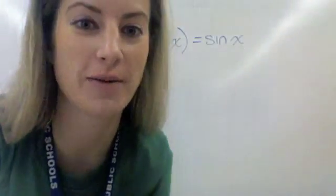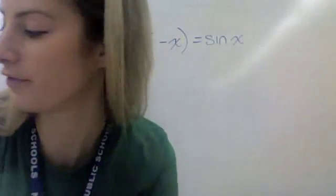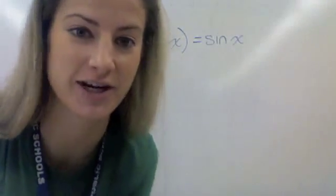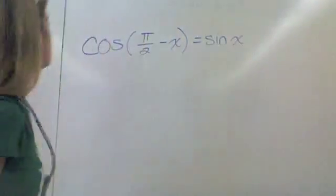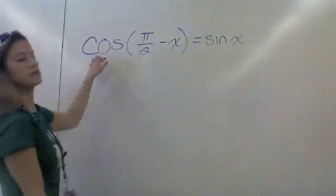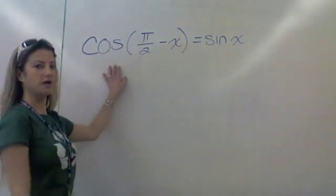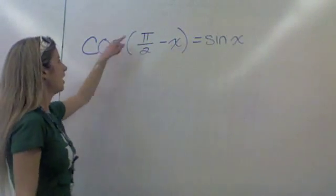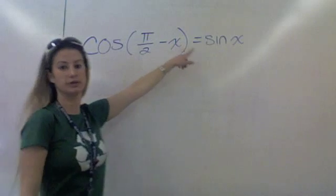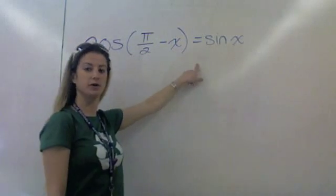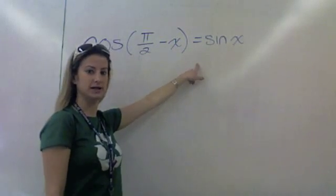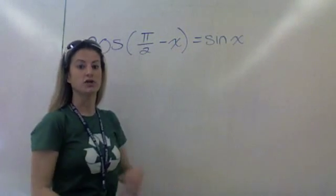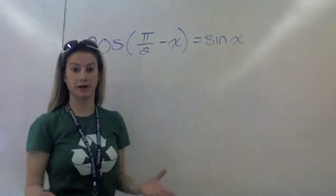So I'm going to do a little proof of one of the co-function identities right now. If you guys remember, we knew that cosine of pi over 2 minus x equals sine x. That was one of your identities from last section. So now I'm going to prove this.